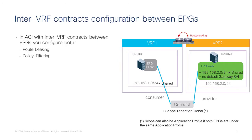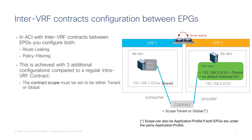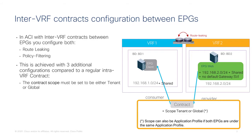To achieve correct forwarding and traffic filtering for traffic between two VRFs, you need to have route leaking in place and the policy CAM correctly programmed. The necessary configurations compared to a regular EPG-to-EPG configuration involve the scope of the contract.